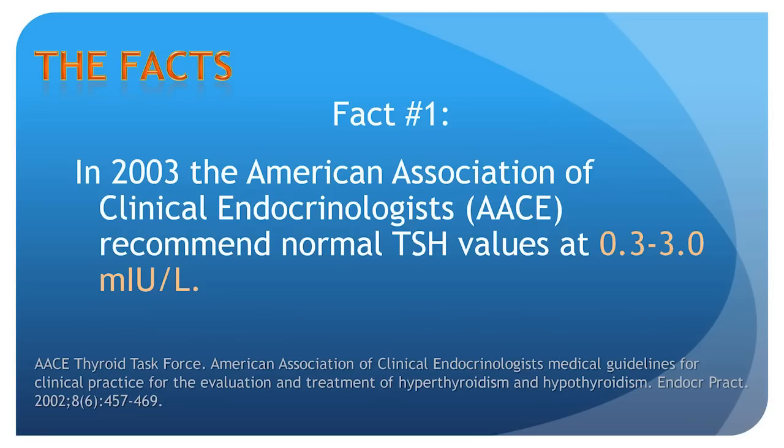Fact number one. In 2003, the American Association of Clinical Endocrinologists, or the AACE, recommended normal TSH values be changed to 0.3 to 3.0 micro-international units per liter. This seems straightforward — these are the experts, and when they got together, they came up with the best answer. Well, not exactly.